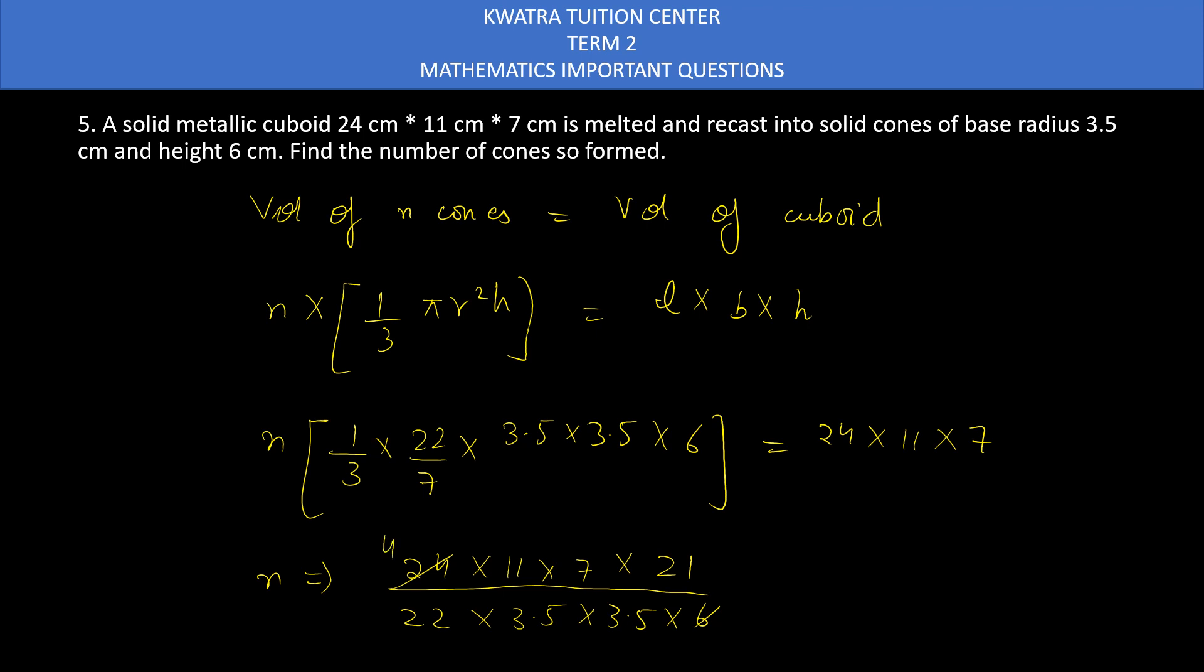7 or 3.5 cancel it with 3.5, 1 here, 0.5 here, then you can cancel 11 and 22, it will give you 2, 2 and 4 cancel it with 2. So then you have 21 divided by 3.5 and you have 0.5.